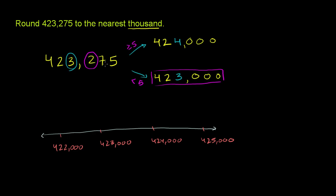Now, 423,275 is going to be someplace right around here. And so when we round to the nearest 1,000, we have to pick between that and that. And we see it is much closer to 423,000 than to 424,000. So we round it right there. We just use the rules we just came up with, and we round it down to 423,000.